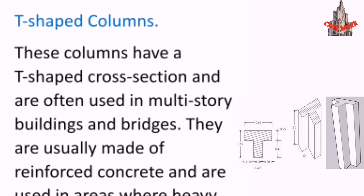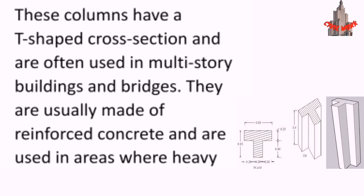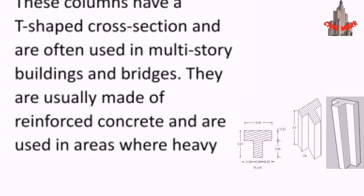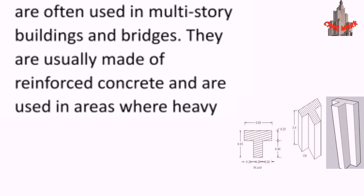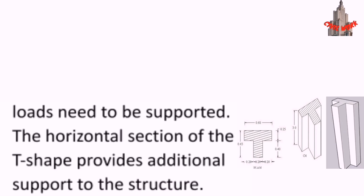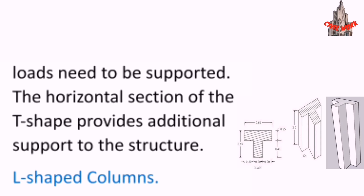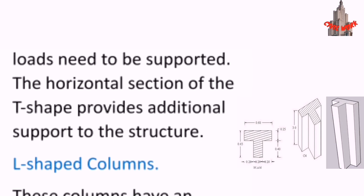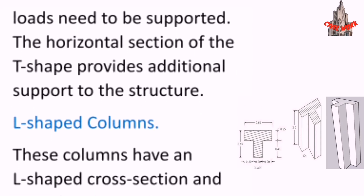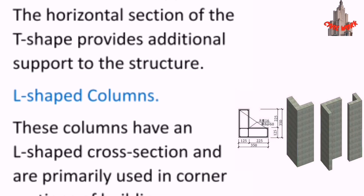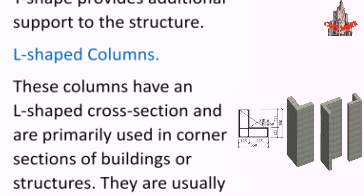T-shaped columns have a T-shaped cross section and are often used in multi-story buildings and bridges. They are usually made of reinforced concrete and are used in areas where heavy loads need to be supported. The horizontal section of the T-shape provides additional support to the structure.